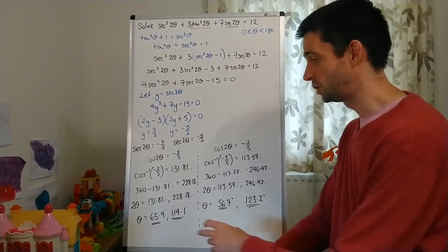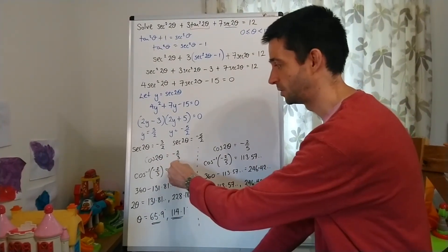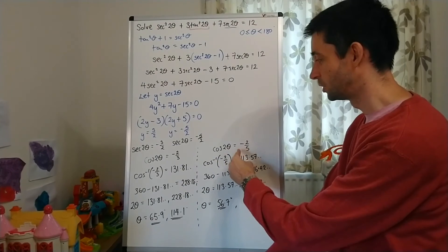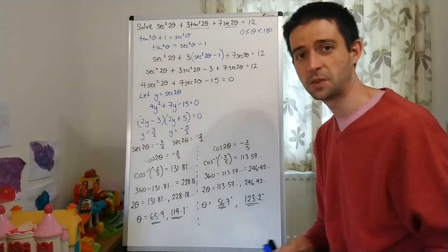So, four solutions there. 2 from cos2θ = -2/3 and 2 from cos2θ = -2/5.